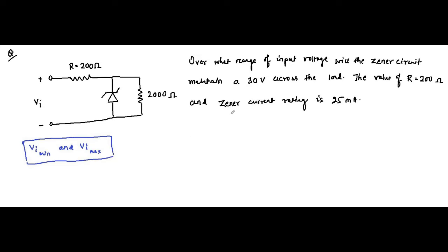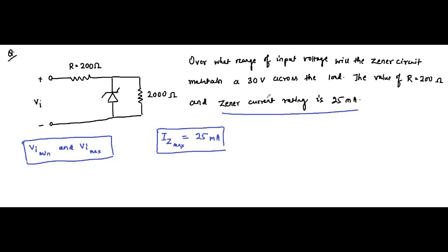A Zener current rating of 25 milliampere means the maximum allowable Zener current is 25 milliampere. Maintaining 30 volts across the load means the Zener breakdown voltage is 30 volt, because only then there will be a constant voltage of 30 volt across the load resistor — that is the whole purpose of Zener diode voltage stabilization and voltage regulation. No minimum Zener current has been specified, so we take I_Z min as zero milliampere.